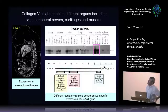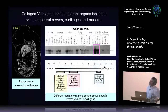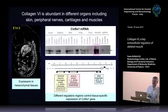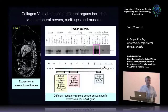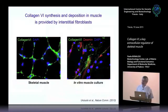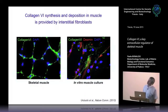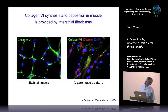Expression in different organs is tightly regulated. The upstream regions of the three different genes are very complex — you have a basal promoter but also different enhancers and silencers tightly regulating collagen 6 expression in different tissues. There is an enhancer for peripheral nerves, one for cartilage, one for skin, and one for skeletal muscle. In skeletal muscle, collagen 6 is found around muscle fibers. Here you see a cross-section of muscle — the green labeling for collagen 6 is in the so-called endomysium, all around the basal lamina of muscle fibers.